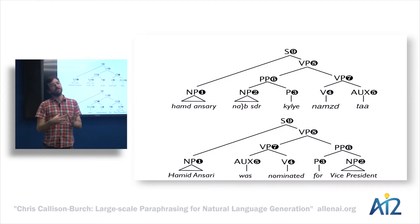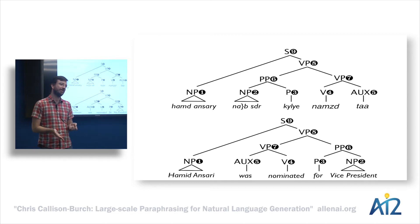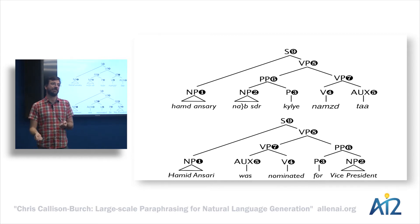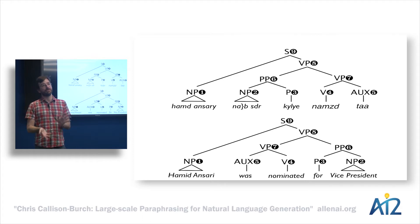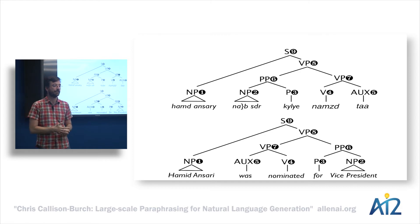Under the hood, we're simultaneously entertaining hundreds of thousands of alternative translations and scoring each one with an associated set of feature functions or a probability. When we reach the goal state, we output the one that's most probable given the model.